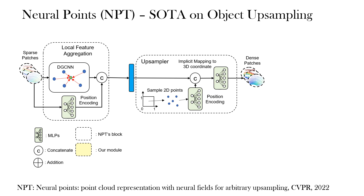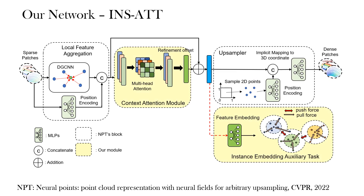In our paper, we propose a new learning-based network to address these issues. Our method is based on the previous state-of-the-art upsampling network, NeuralPoints, which uses local feature aggregation following an upsampler to infer the densification of simulated objects. Based on this architecture, we propose two modifications to deal with real-world upsampling.